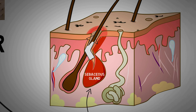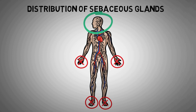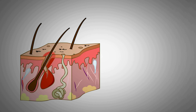The sebaceous glands secrete an oily secretion known as sebum. In addition to its role as a protective barrier that reduces skin dehydration, sebum also possesses antibacterial properties. The sebaceous glands are distributed over the entire body with the exception of palms and soles — they are most abundant on the scalp and face. Under normal circumstances, small amounts of sebum are produced to keep your skin moist.